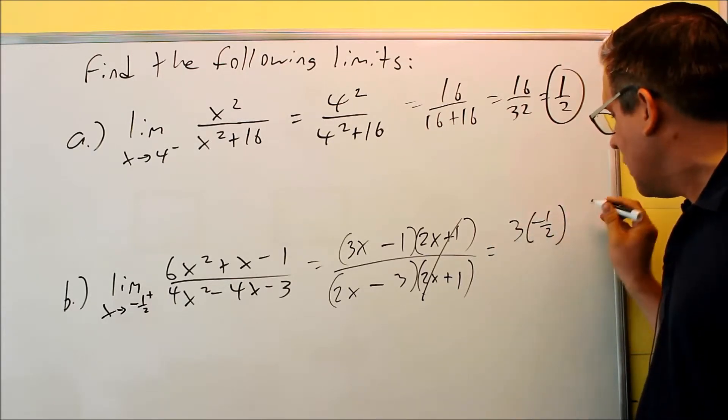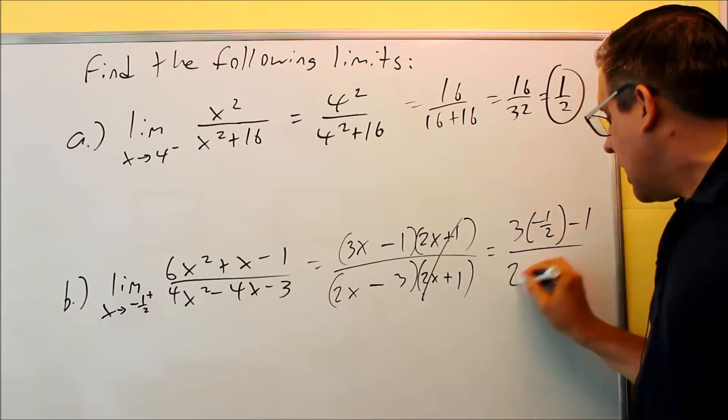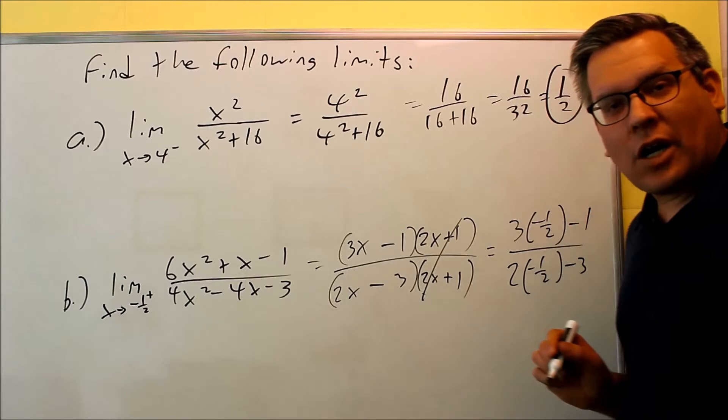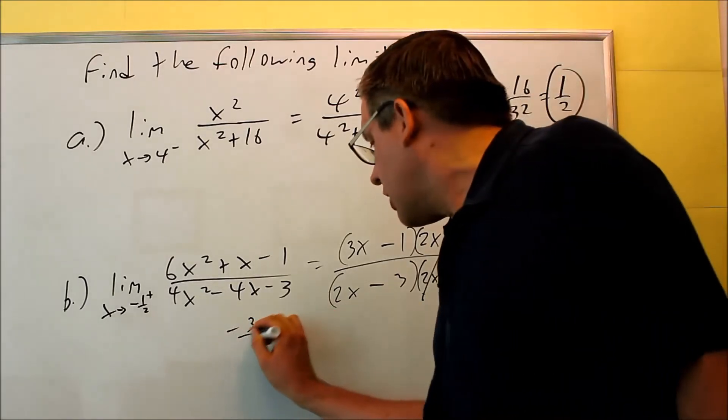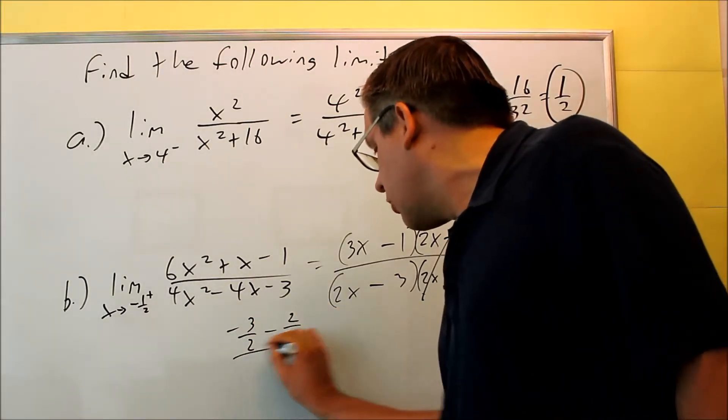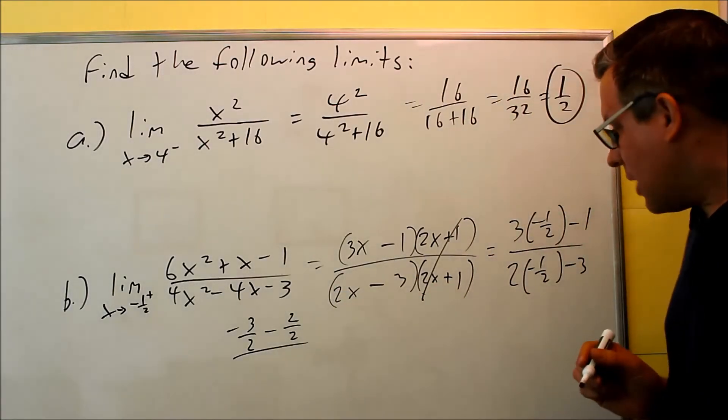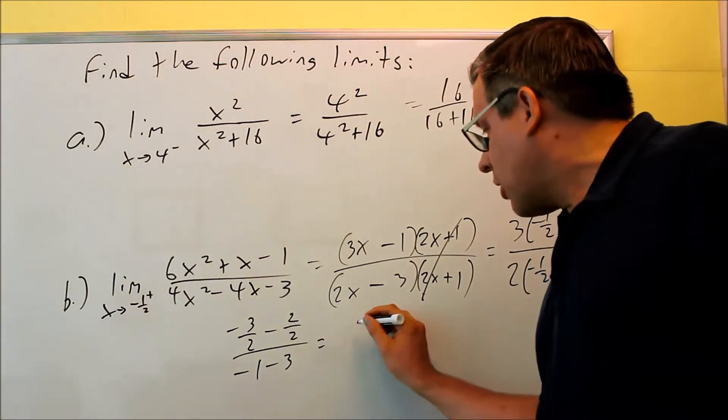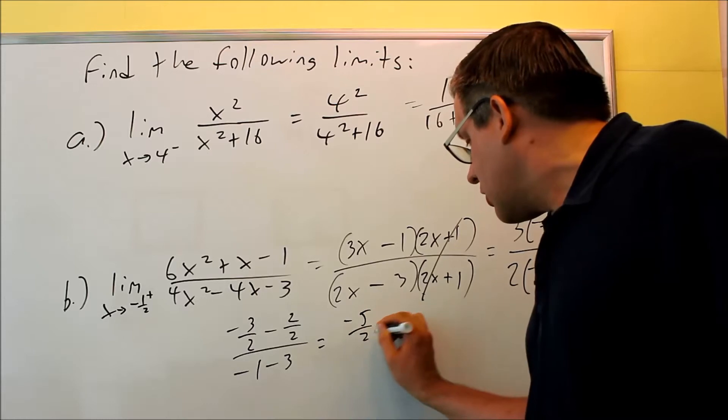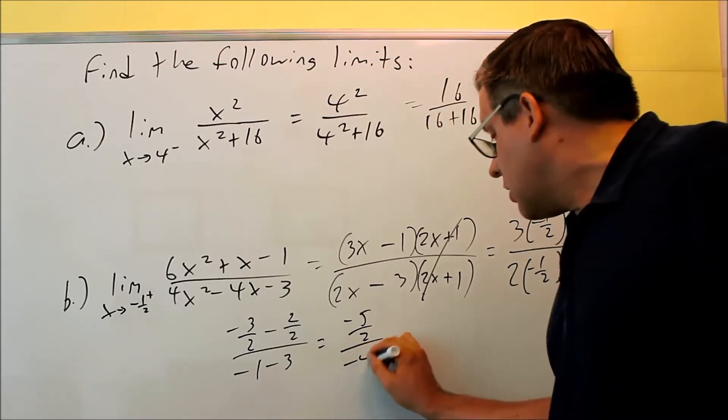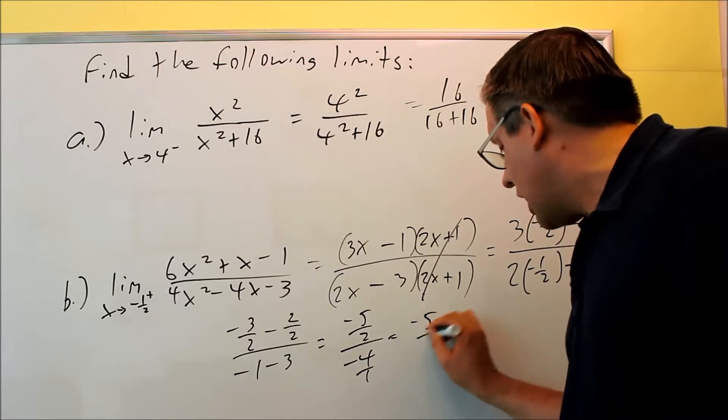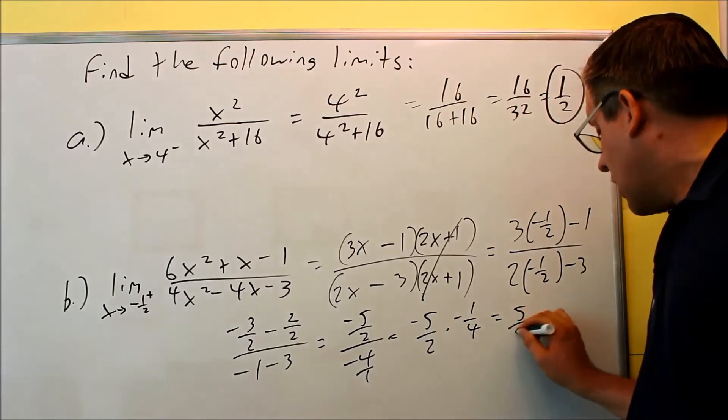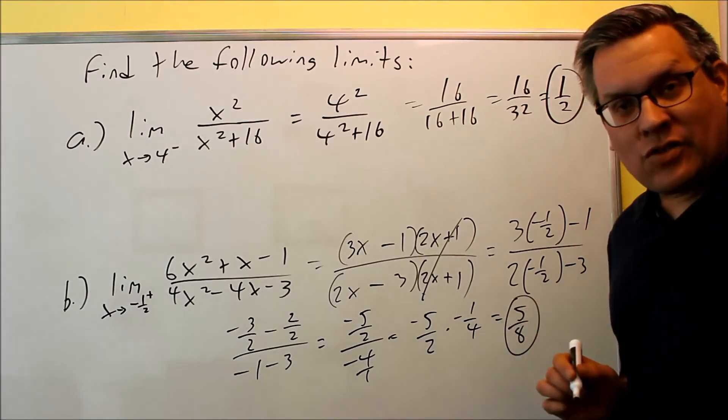So I'm going to do 3 times negative 1 half, minus 1 on the bottom. I have 2 times negative 1 half, and then minus 3. I'm going to work out the top and bottom. So the top one, I get negative 3 halves, minus 2 over 2. I can write the 1 as negative 2 halves on the bottom. The 2's are going to cancel. I get negative 1 minus 3. So on top, I can work that out. I get negative 5 halves. And then down here, I get negative 4. I'm going to flip the fractions. Negative 5 halves times negative 1 fourth. Negative signs will give me a positive, so my answer is going to be positive 5 eighths.